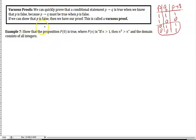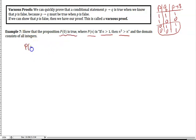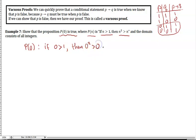Let's look at an example. Consider the proposition P(n): if n is greater than 1, then n² is greater than n. Notice this looks like a proof by induction. I want to show that P(0) is true — this is the basis case. P(0) says: if 0 is greater than 1, then 0² is greater than 0.